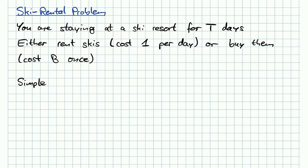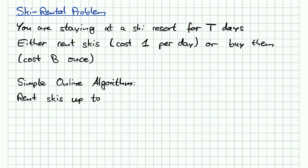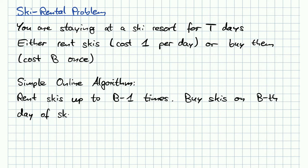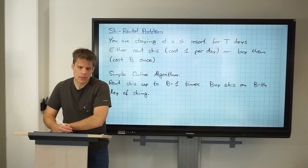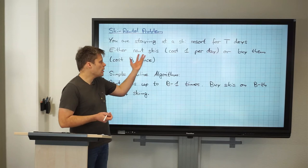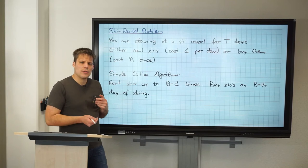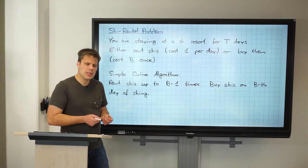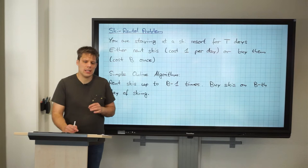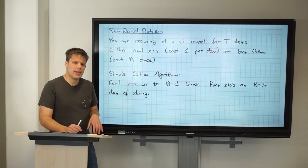This very simple algorithm works as follows. We rent the skis up to B minus 1 times, and then we buy the skis on the Bth day of skiing. You just know how expensive it is to rent and buy the skis, and you start by renting up to the point where you have spent almost as much on renting as you would have spent buying. Then you buy them.